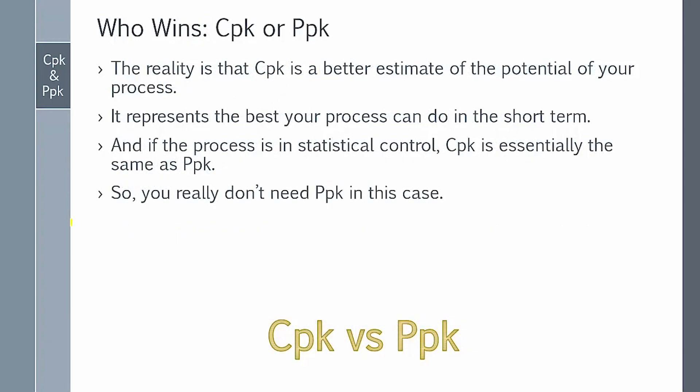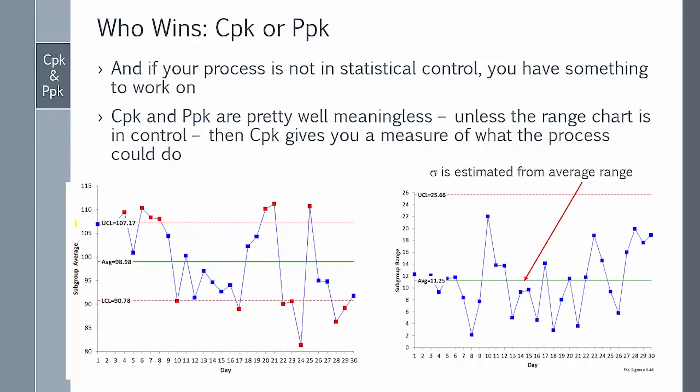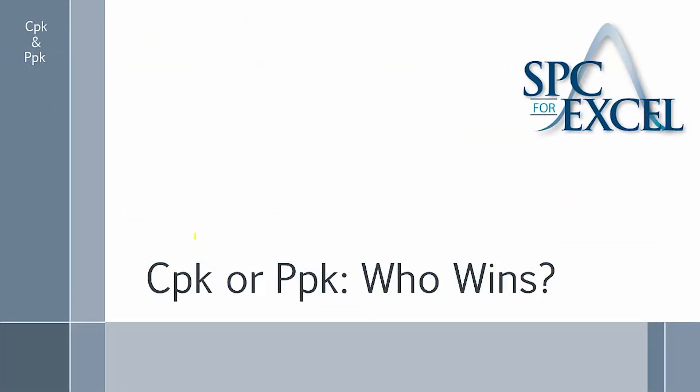So the reality is that CPK is a better estimate of potential of your process. It represents the best your process can do in the short term. And if your process is in statistical control, CPK is essentially the same as PPK. So you really don't need PPK in that case. But if your process is not in control, you've got something to work on. And in reality, both CPK and PPK are pretty well meaningless, particularly PPK. But if your range chart is in control, CPK can give you a measure of what your process could do if you brought it into statistical control. So that's a look at CPK or PPK and who wins.